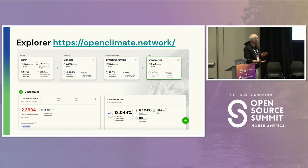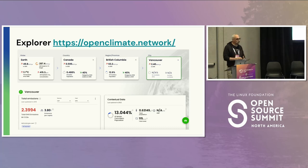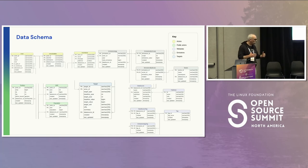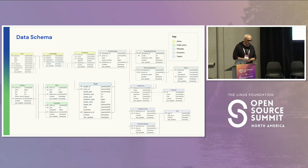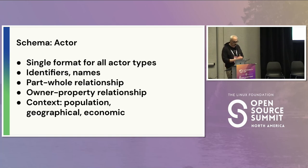We have a system called the Open Climate Network that you can find at openclimate.network, which shows off the system we have built to provide this infrastructure. The biggest challenge of building this system was coming up with a schema to harmonize towards — one that covered the important parts of the climate effort and left out things that weren't relevant for setting policy, achieving targets, and taking actions.